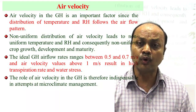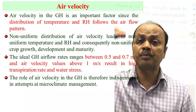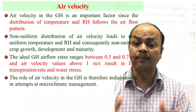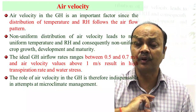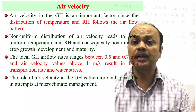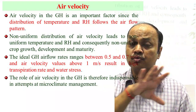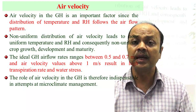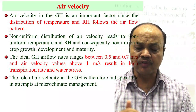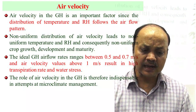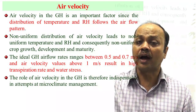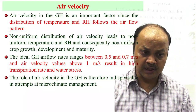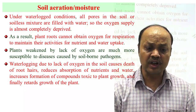If a plant is 10 feet tall, humidity at the lower portion may be higher and different at the upper portion. With adequate air velocity, temperature and humidity will mix uniformly throughout the greenhouse. The ideal air velocity in a greenhouse is between 0.5 to 0.7 meters per second. If air velocity is too high, fresh air replaces greenhouse air, increasing vapor pressure difference and thus transpiration.